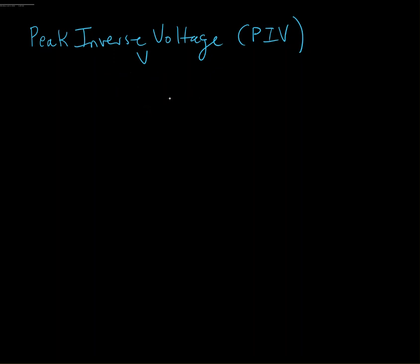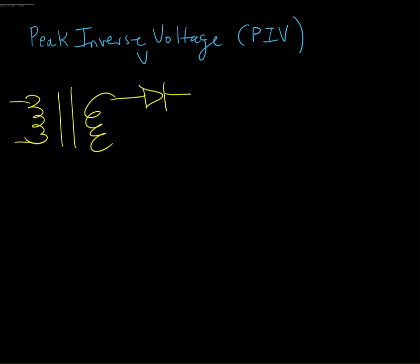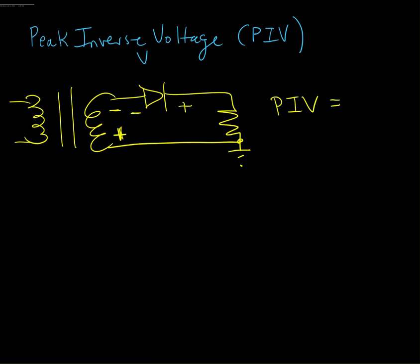To start, we have the half-wave rectified circuit. I've got my primary, my secondary, my diode, my load resistor, and back to the transformer. When the diode is reverse biased, it's when the polarity on the secondary is reversed and there's no current flow, so it's that full V-secondary that the diode has to withstand — the secondary peak voltage, VS_peak.